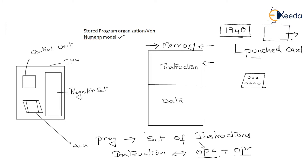Since a program is a collection of instructions and is stored in main memory, the program has two parts. One is the instruction part, which goes into instruction memory. The other is the data part, which is the collection of operands needed to support the program's instructions. Every time you execute an instruction, it may require one or more data operands. So essentially, the memory is divided into two parts: the instruction part and the data part.